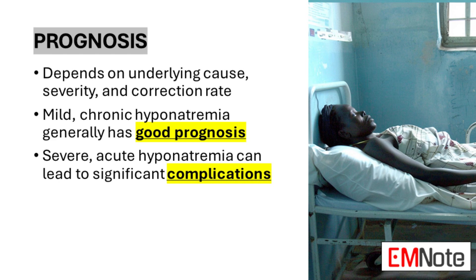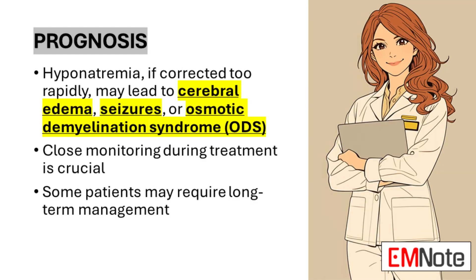Prognosis. The prognosis of hyponatremia is intrinsically linked to its underlying cause, severity, and the approach to its correction. Mild chronic hyponatremia, when appropriately managed, generally carries a favorable prognosis. However, severe acute hyponatremia can lead to significant complications. If corrected too rapidly, hyponatremia may lead to morbidity and mortality due to cerebral edema, seizures, and osmotic demyelination syndrome.